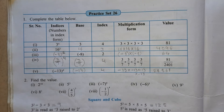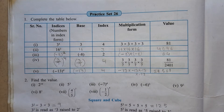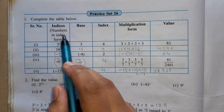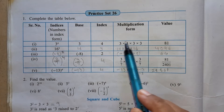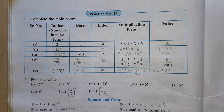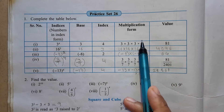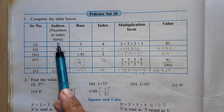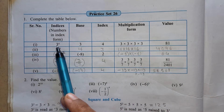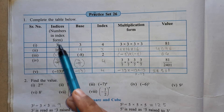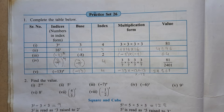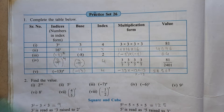Good morning students. We are studying the 6th lesson that is Indices. Indices means the numbers in the index form. When the same number is multiplied again and again many times, this multiplication can be written in a short way — that is index form. The number being multiplied is written as the base, and how many times it is multiplied is written as the power, a little above the base.